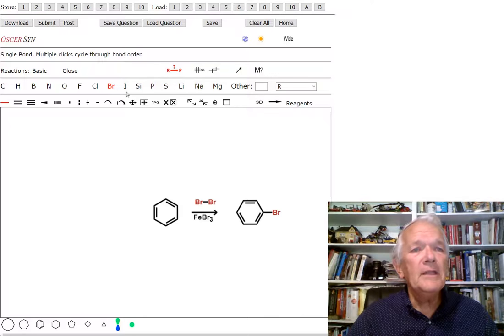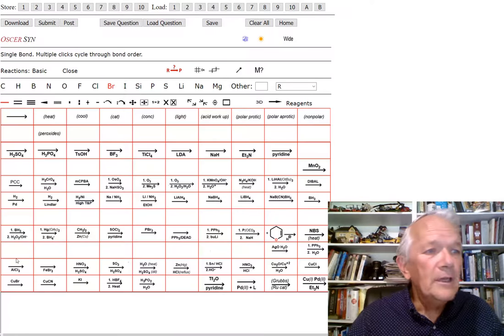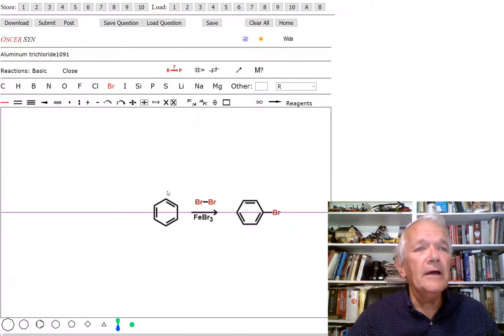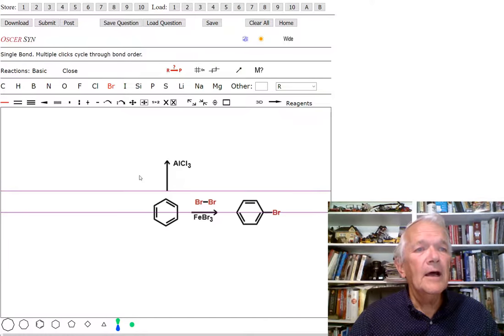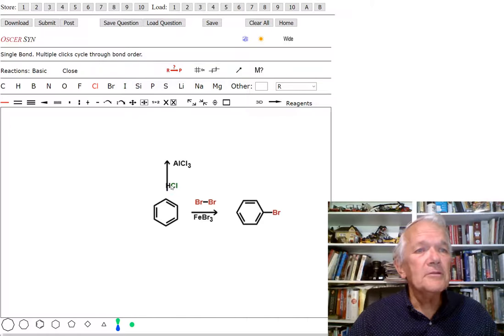More fun than that is the Friedel-Crafts reaction. So for the Friedel-Crafts reactions, we need an aluminum trichloride catalyst. What compounds shall we add? How about a good old friend, propyl chloride. That's where everybody starts. So, we'll add the propyl group here.